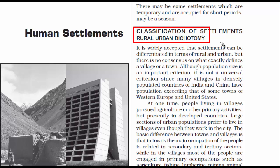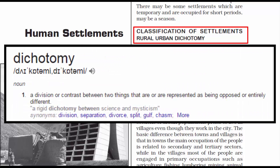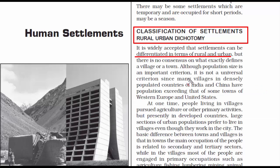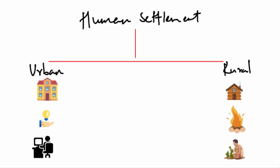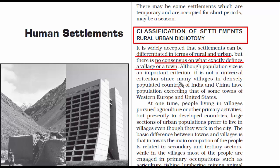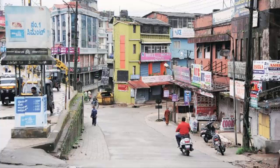Now we go to the topic — classification of settlements, rural-urban dichotomy. The word dichotomy means duality, dividing into two parts with opposing views. Human settlements are divided into rural and urban, but there is no clear way to define what is a village and what is a town. We generally differentiate based on development or modernization, but that's not accurate because villages in developed countries sometimes have better facilities than towns in developing countries.